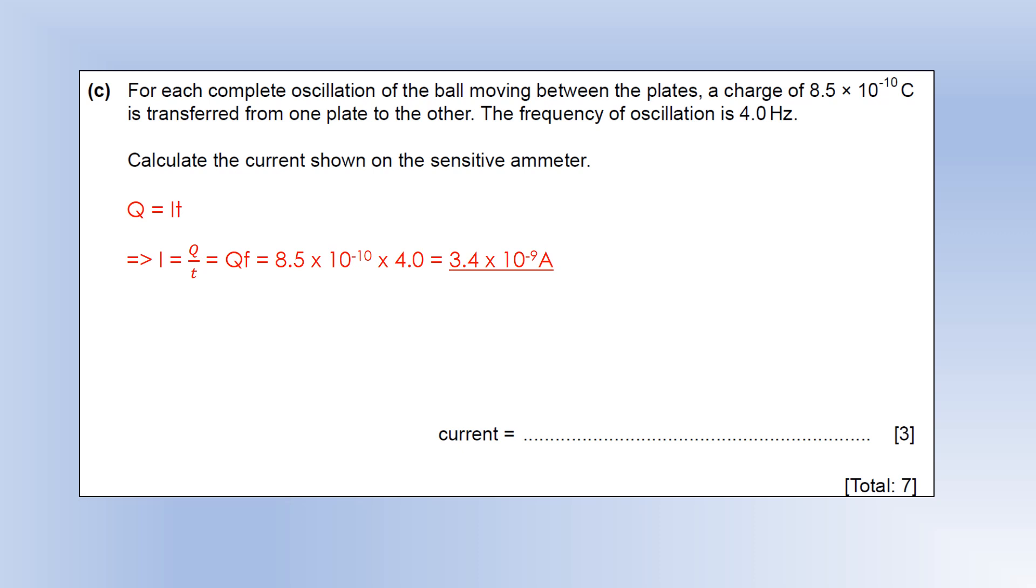We're doing 8.5 times 10 to the minus 10 times by 4, gives us 3.4 times 10 to the minus 9 amps, which is why we needed a very sensitive ammeter. And that completes these past exam questions.